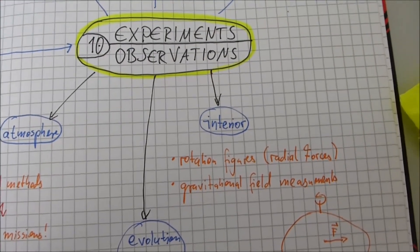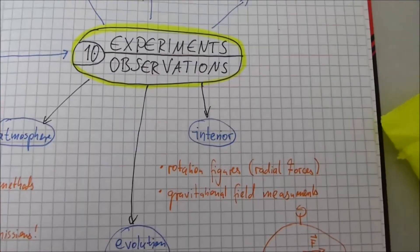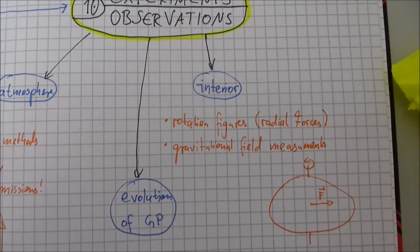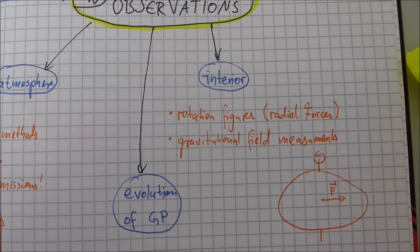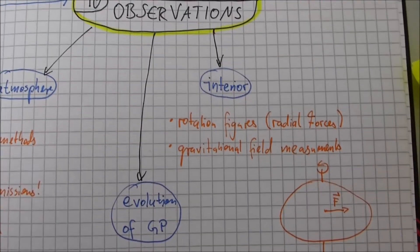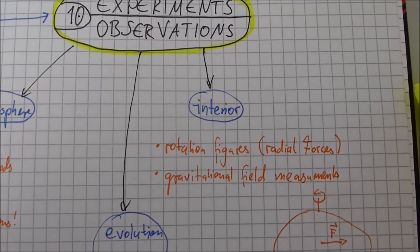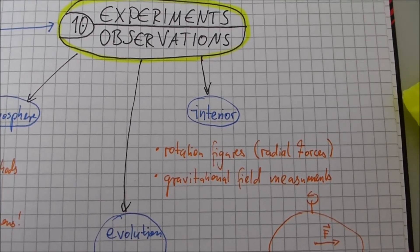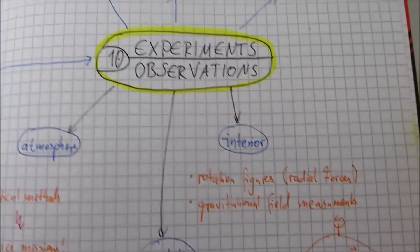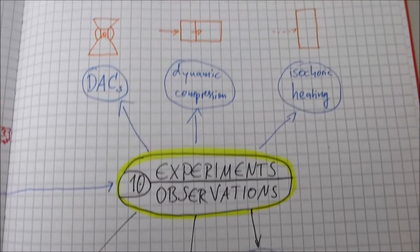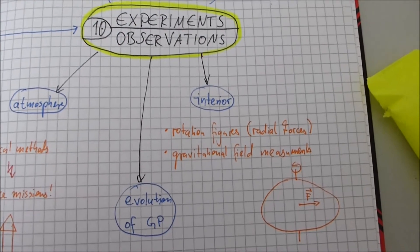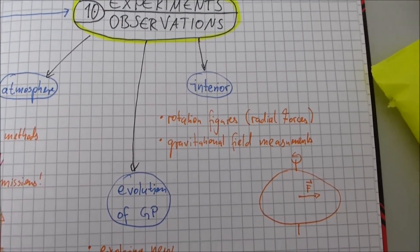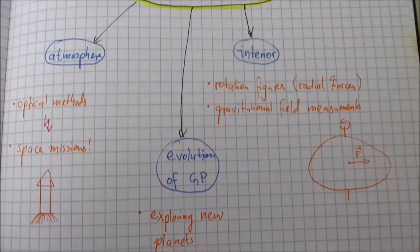And then another region is interior. Here could help rotation figures, because we have radial forces and with this deformations of the planet, like I showed in this little sketch. I know it's not the best sketch. And then also gravitational field measurements. But the interior is better to understand with these experiments, because rotation figures and gravitational field measurements are not so approved.